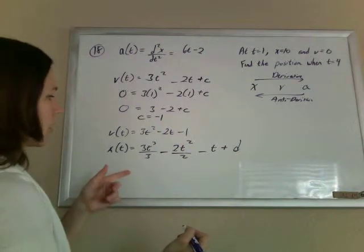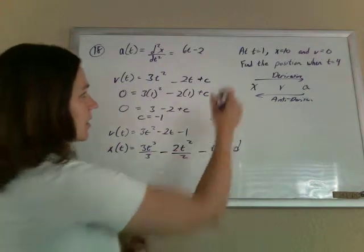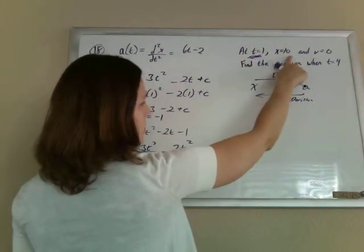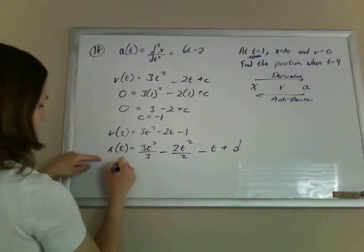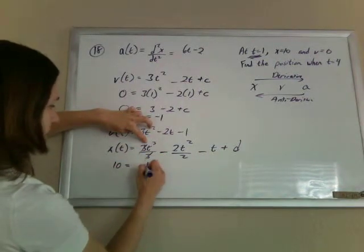And so now, to figure out what that constant is, you just use the information they give you. So when t is 1, x is 10. So x is 10 when t is 1. So those are canceling, so this is...